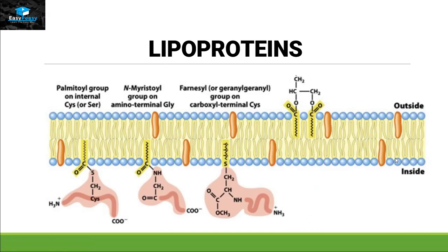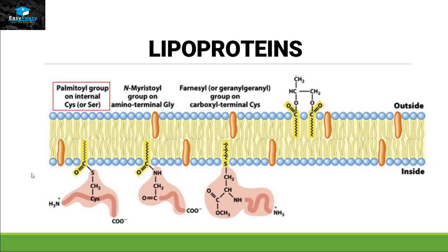Lipoproteins: a lipoprotein is a protein with a lipid attached to it. All proteins that need to attach to the cell membrane — either inside or outside — require a lipid component, because lipids are hydrophobic and membrane attachment cannot occur without it. There are three types of linkage: the palmitoyl group on internal cysteine or serine, the myristoyl group on glycine, and the farnesyl group on the carboxy terminal of cysteine. These three attachments allow the protein to anchor itself to the cell membrane.